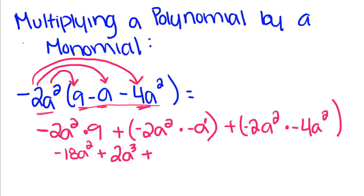Then plus negative 2 times negative 4, which is going to be positive. 2 times 4 is 8, a to the fourth. I got a to the fourth not by multiplying 2 times 2, but adding 2 plus 2. This is our new expression.